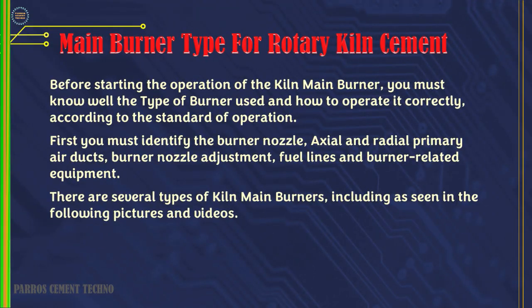Before starting the operation of the kiln main burner, you must know well the type of burner used and how to operate it correctly, according to the standard of operation. First you must identify the burner nozzle, axial and radial primary air ducts, burner nozzle adjustment, fuel lines and burner-related equipment. There are several types of kiln main burners.